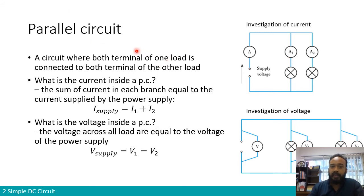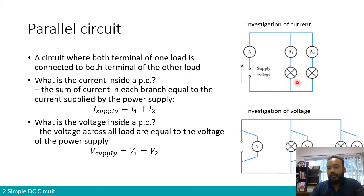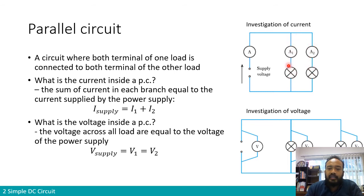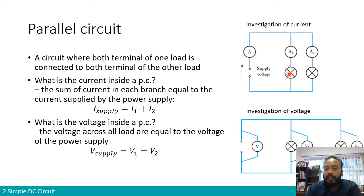Now we look at parallel circuits. A parallel circuit is when both terminals of one load are connected to both terminals of another load. Here the lamps have their top terminals connected to each other and their bottom terminals connected to each other — both terminals are connected. They are also connected to a voltage supply. We want to observe what happens to current and voltage characteristics in a parallel circuit.